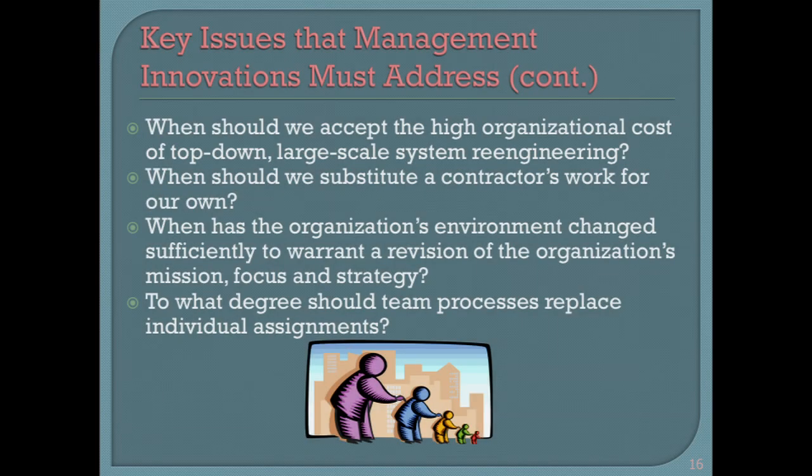One of the issues a manager has to face when doing innovation is: when should we accept the high organizational cost of radical change — top down, let's just redo the whole thing? Then there's the make-or-buy decision: when should we have a contract to do this because it's not central to what we do? When has the organization's environment changed so much that we have to change our mission, our focus, and our strategy in order to survive? When should we use groups to do work instead of individuals? Those are issues that innovators have to ask.